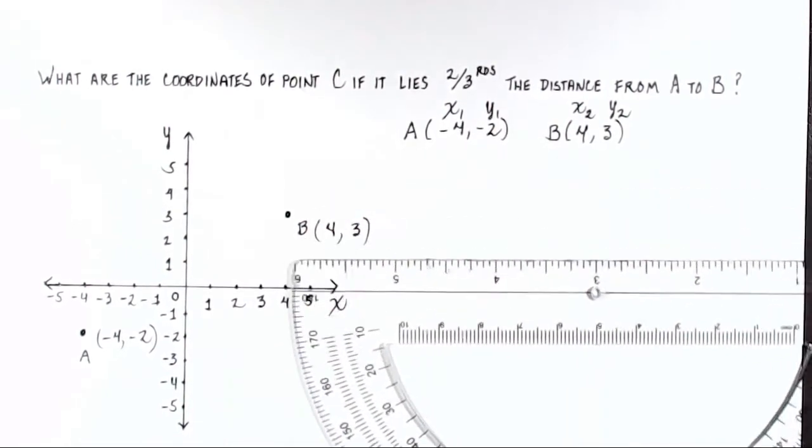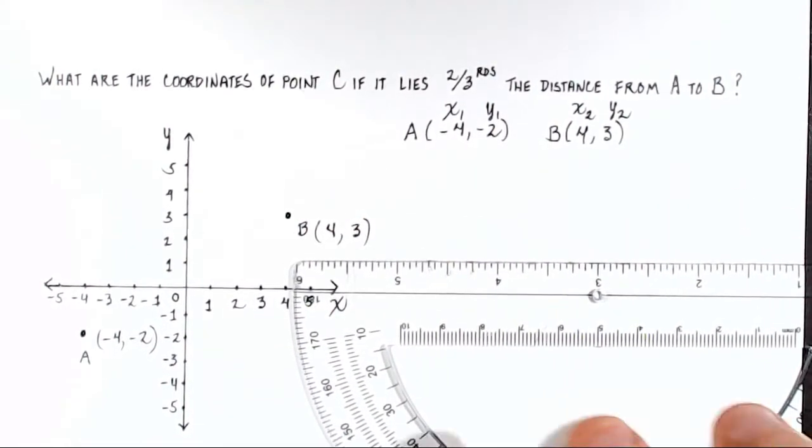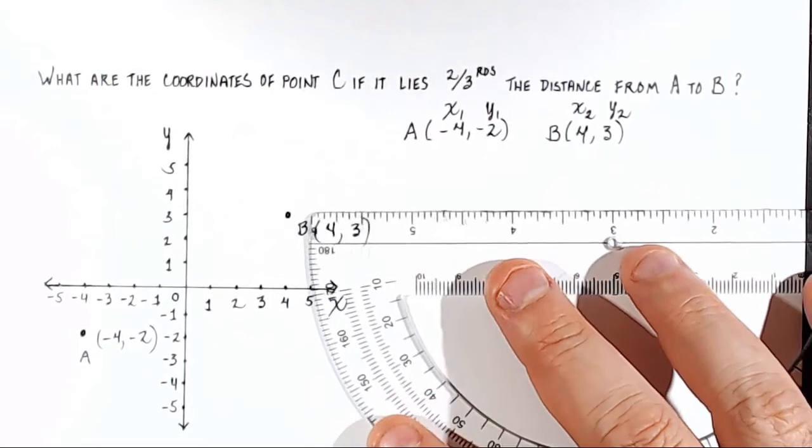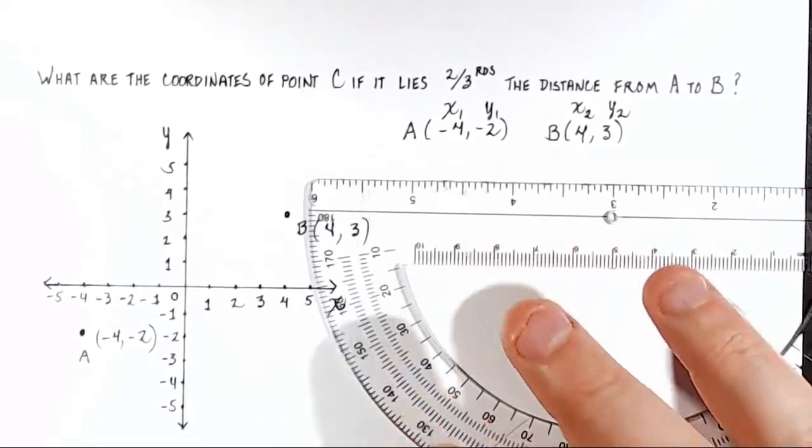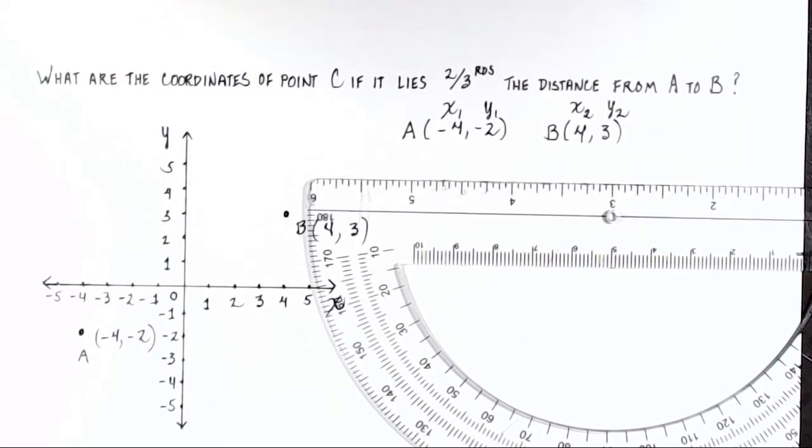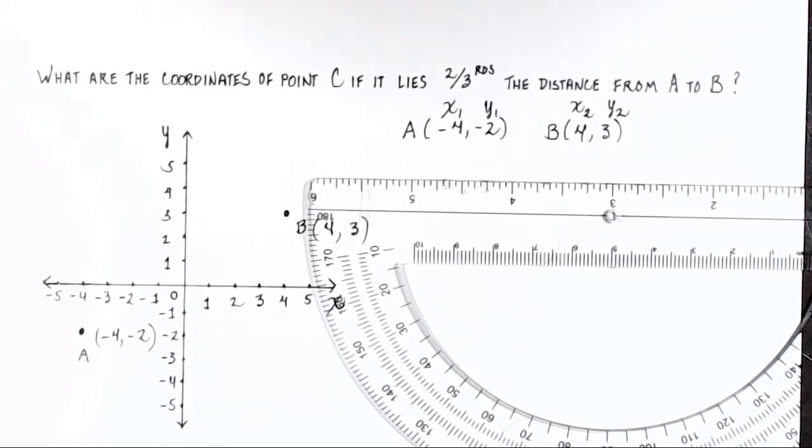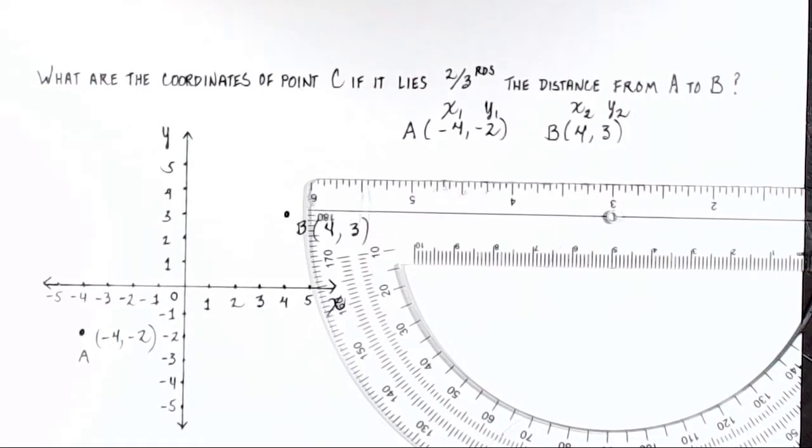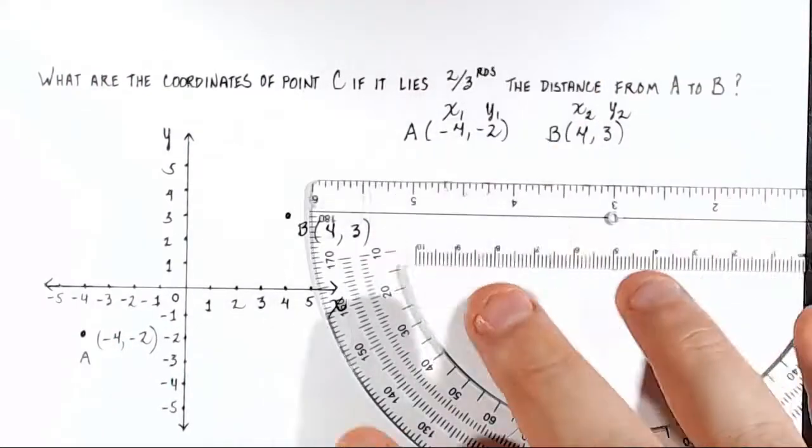So now what? Well, the now what involves us finding the absolute difference between the x values and multiplying that absolute difference by the fraction and then adding it to our x1 value and then doing the same thing for the y values. Let me show you what that looks like.